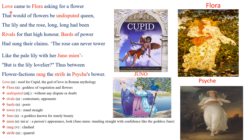Love is Cupid, the Roman god of love. Flora is the Roman goddess of flowers. Psyche is a princess of outstanding beauty and Cupid's love interest. Juno is a goddess known for her stately beauty and is the wife of Jupiter.